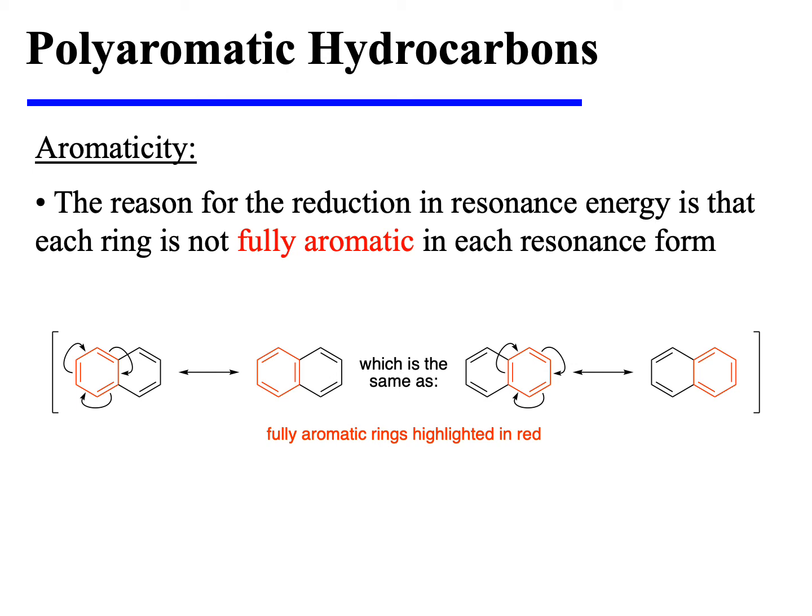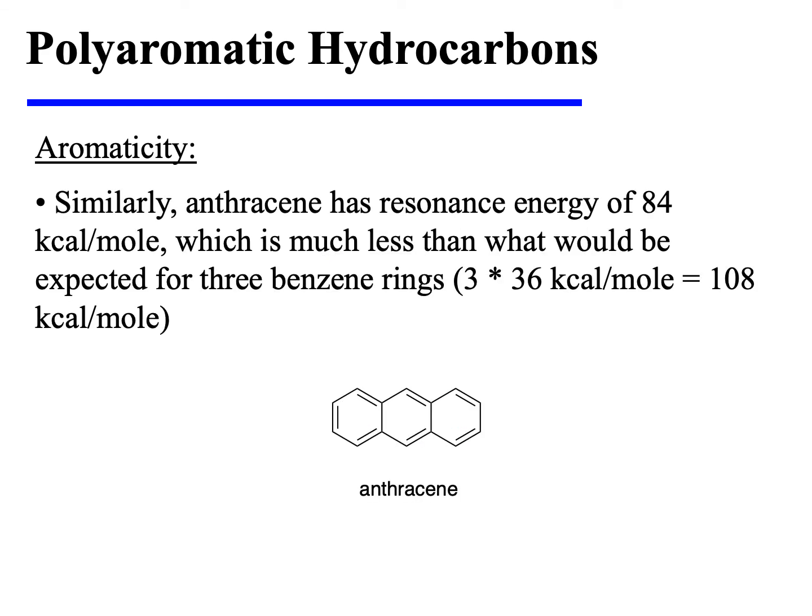So, in each resonance structure, only one of the two rings is exhibiting complete and full aromaticity. This is why we see less stabilization than we would have anticipated for a comparable number of independent benzene rings. Similarly, anthracene has a resonance energy of 84 kilocalories per mole, which is much less than what would be anticipated for three independent benzene rings.